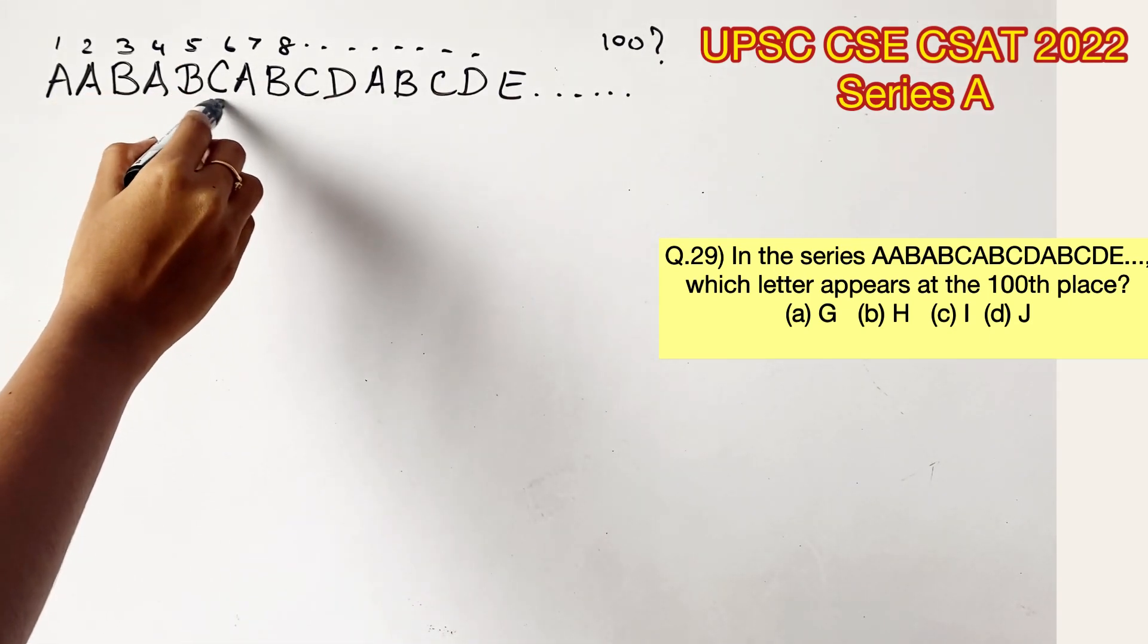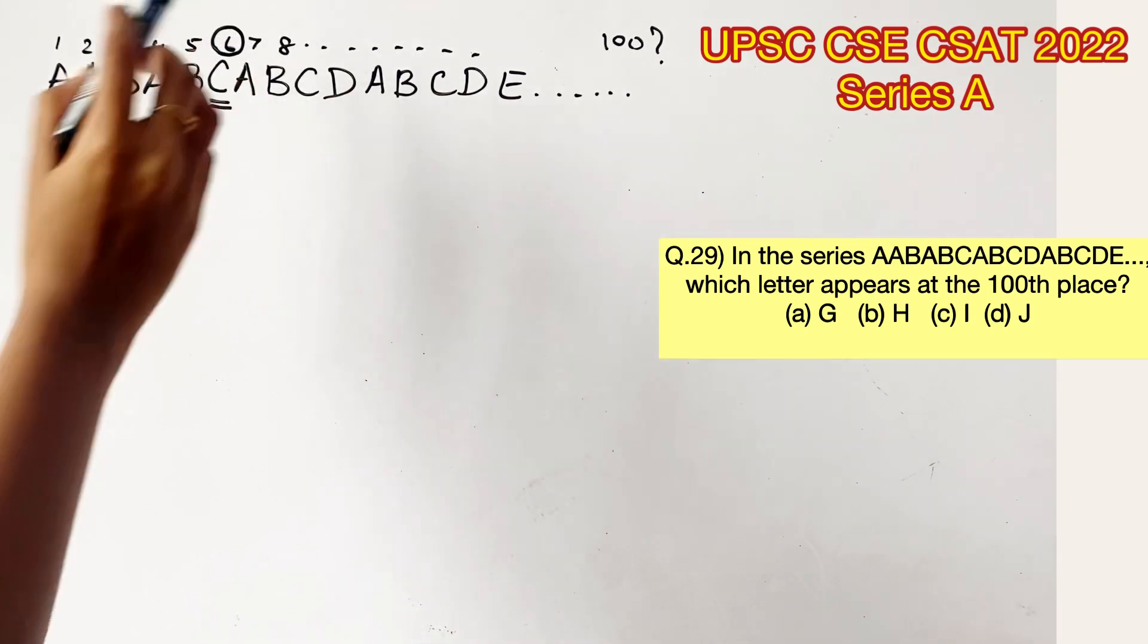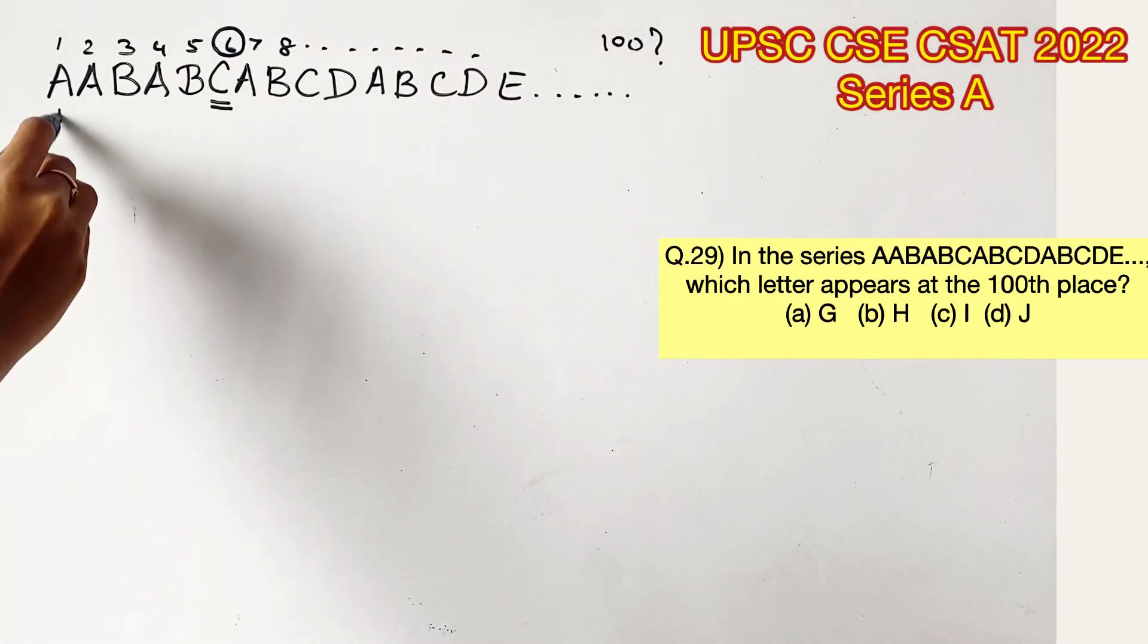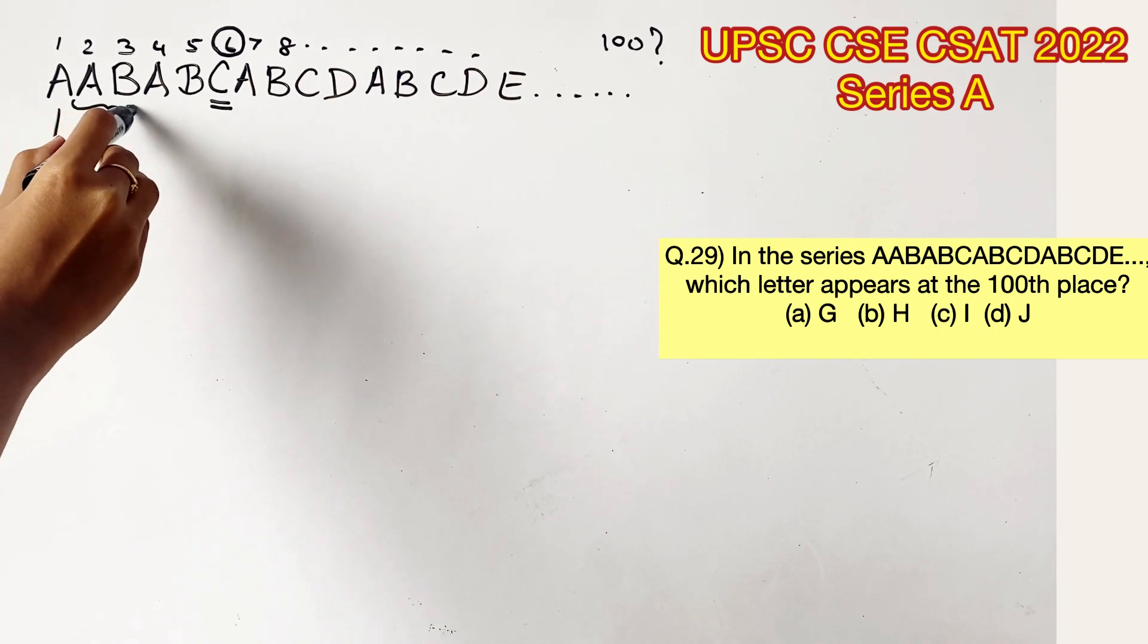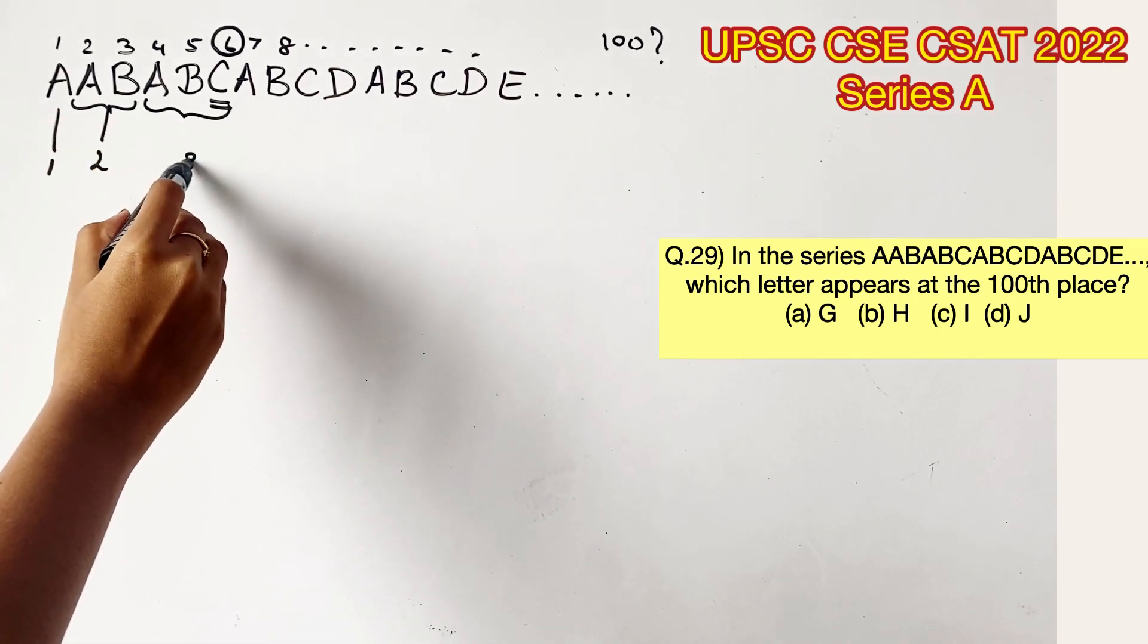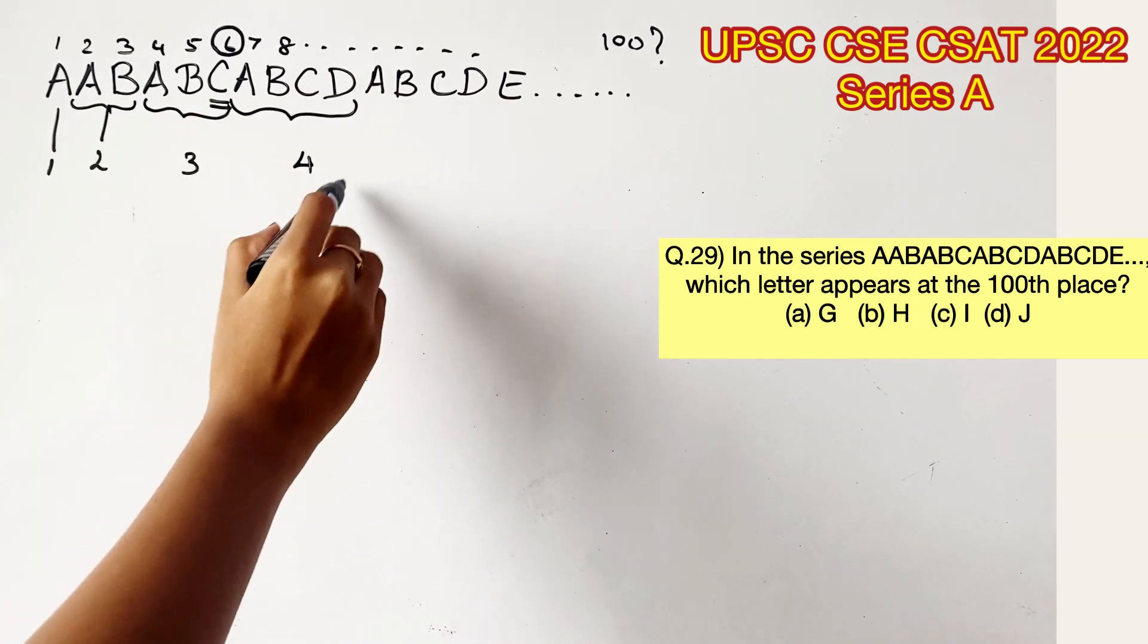For example, let's take this value, the 6th position. So, the 6th position is C. Now, I am going to mark the first one as 1, and the second A, B as 2, the next 3, A, B, C, as 3, and the next 4 as 4, and so on.